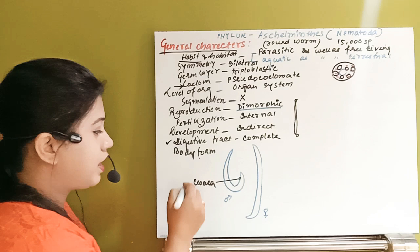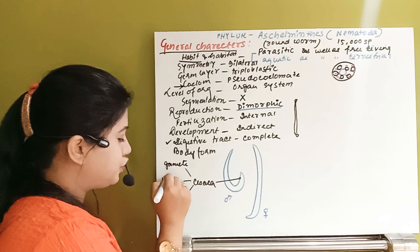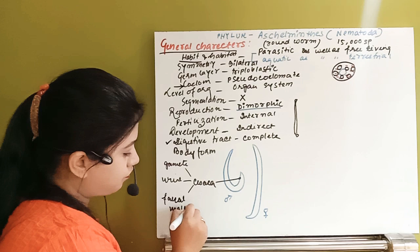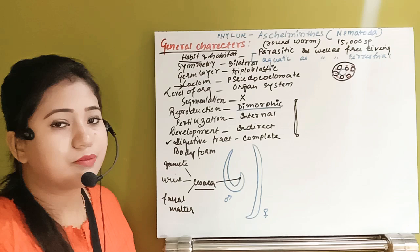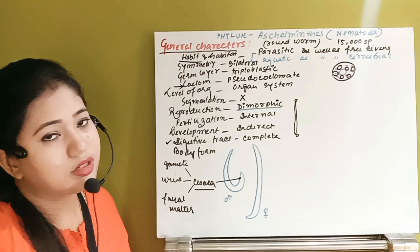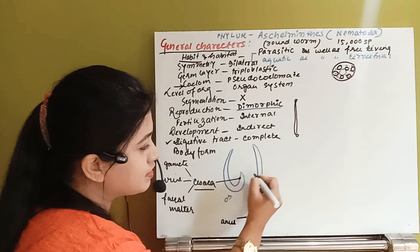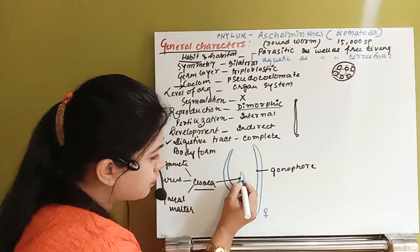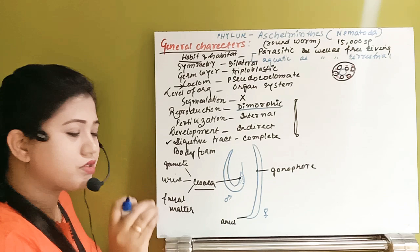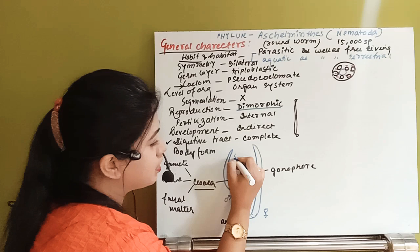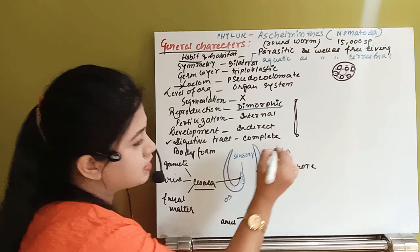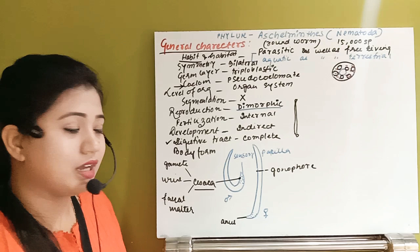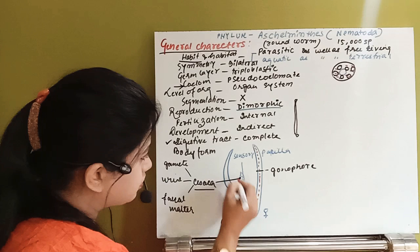In the male there is a common aperture called the cloaca, which is the single opening through which gametes, urine, and fecal matter are all released together. In the female, however, the anus and gonophore are separate openings — so the female does not have a cloaca. The organism also has 55 pairs of sensory papillae, which are small elevations where nerve endings are present.